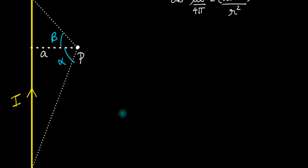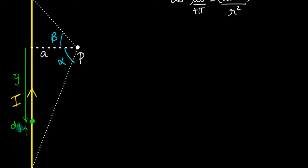To calculate this, let's take a very tiny current element somewhere on the wire. The length from the bottom of the wire to this element, let's call that y, and this additional tiny length is dy. You can think of dy as a tiny current carrying wire with current i. The first step is to calculate the magnetic field at point P only due to this portion.